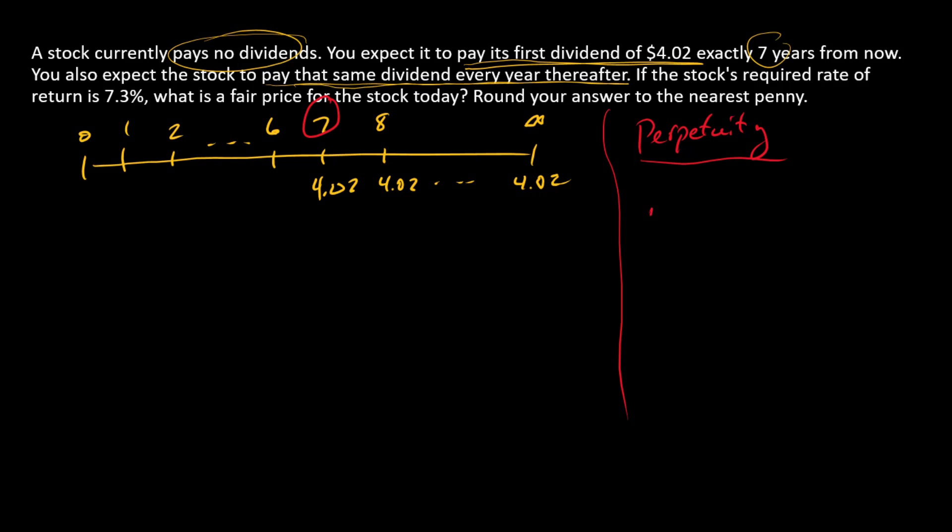When we think about our present value of a perpetuity, it's going to be a cash flow divided by a discount rate. But that cash flow needs to occur one period after the period in which you're calculating the present value.